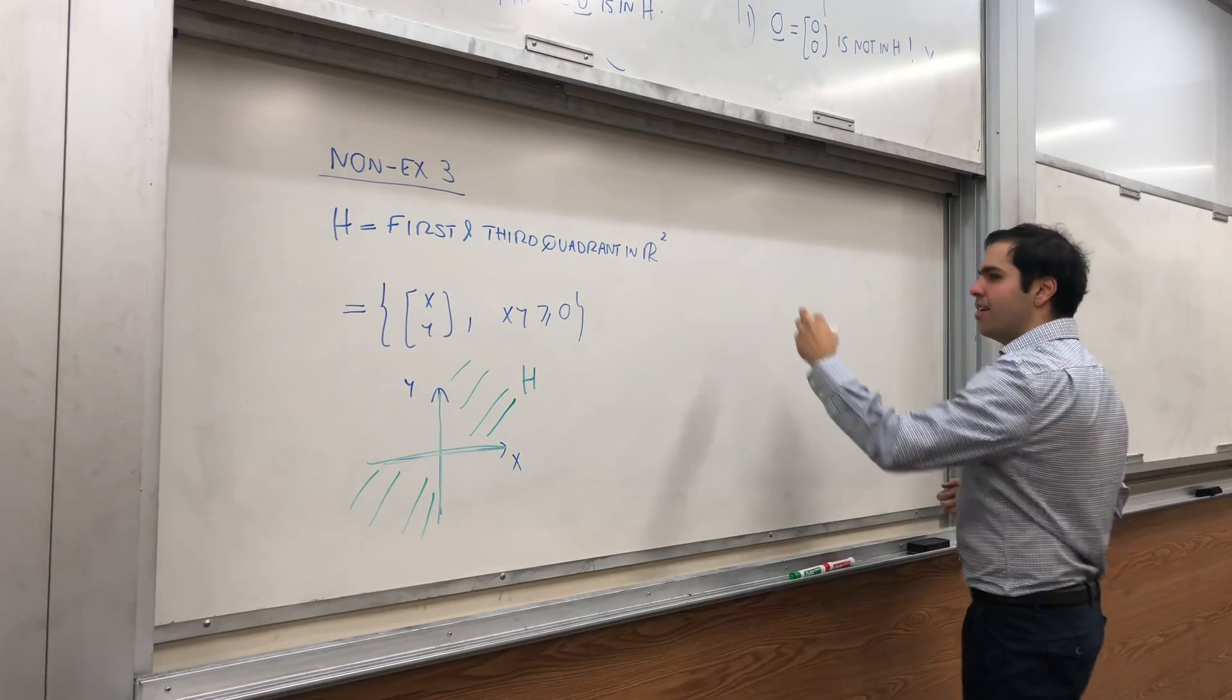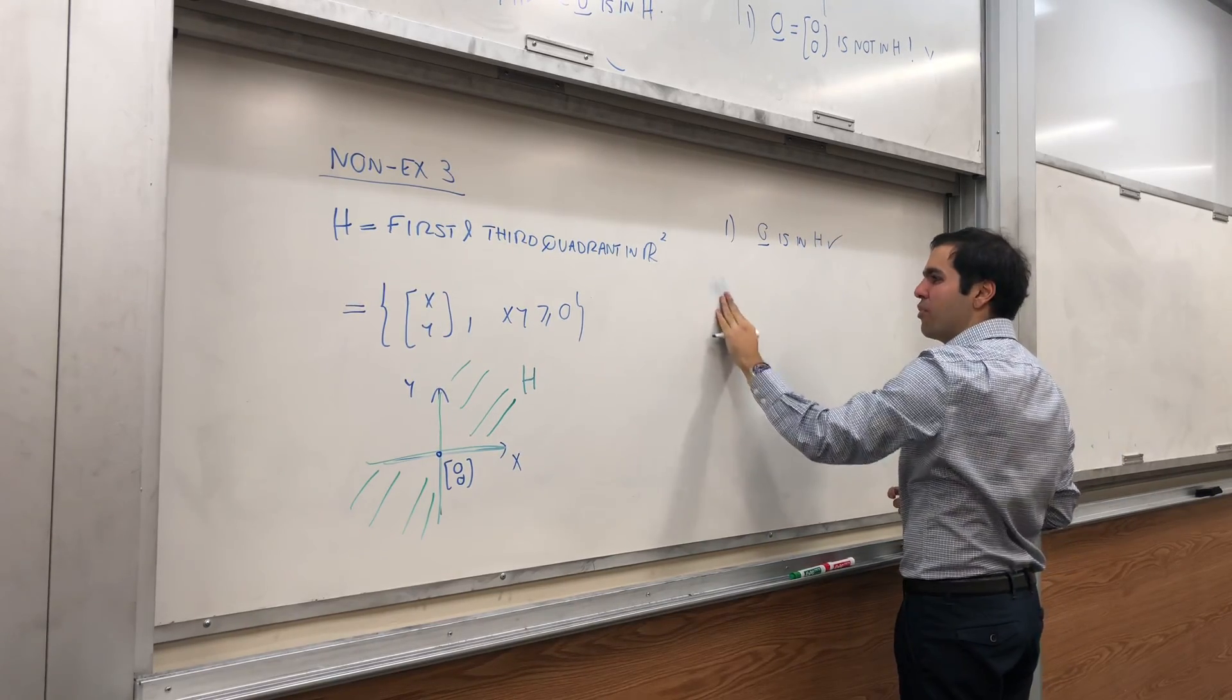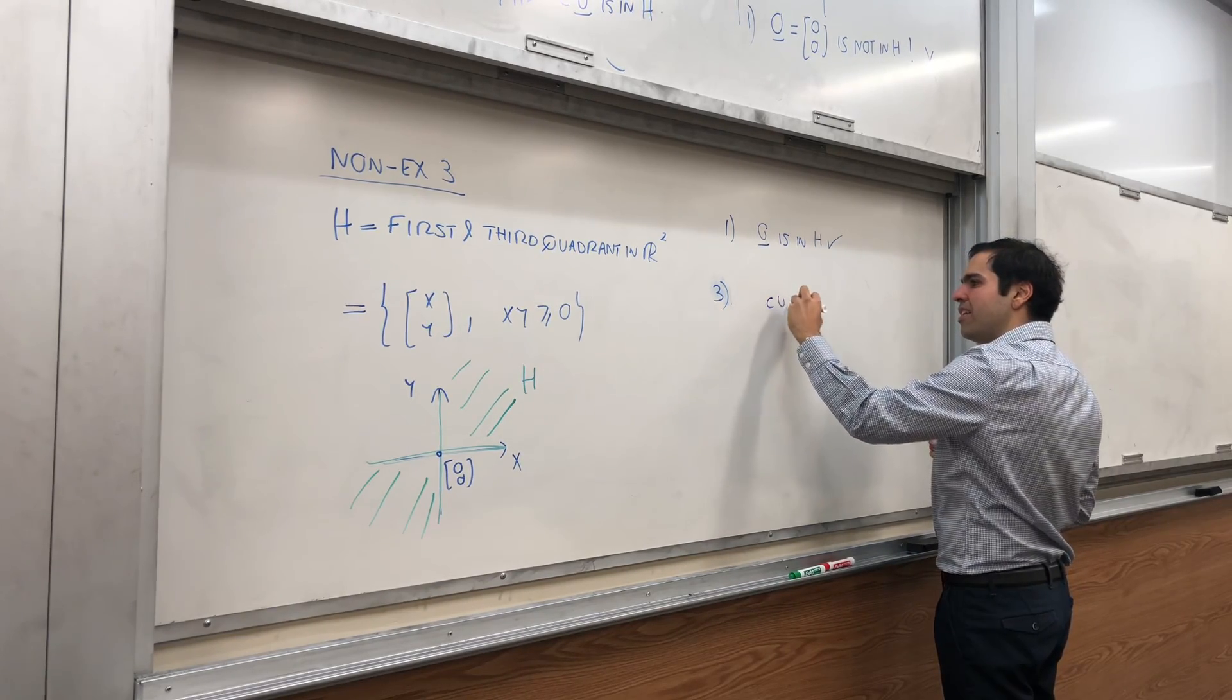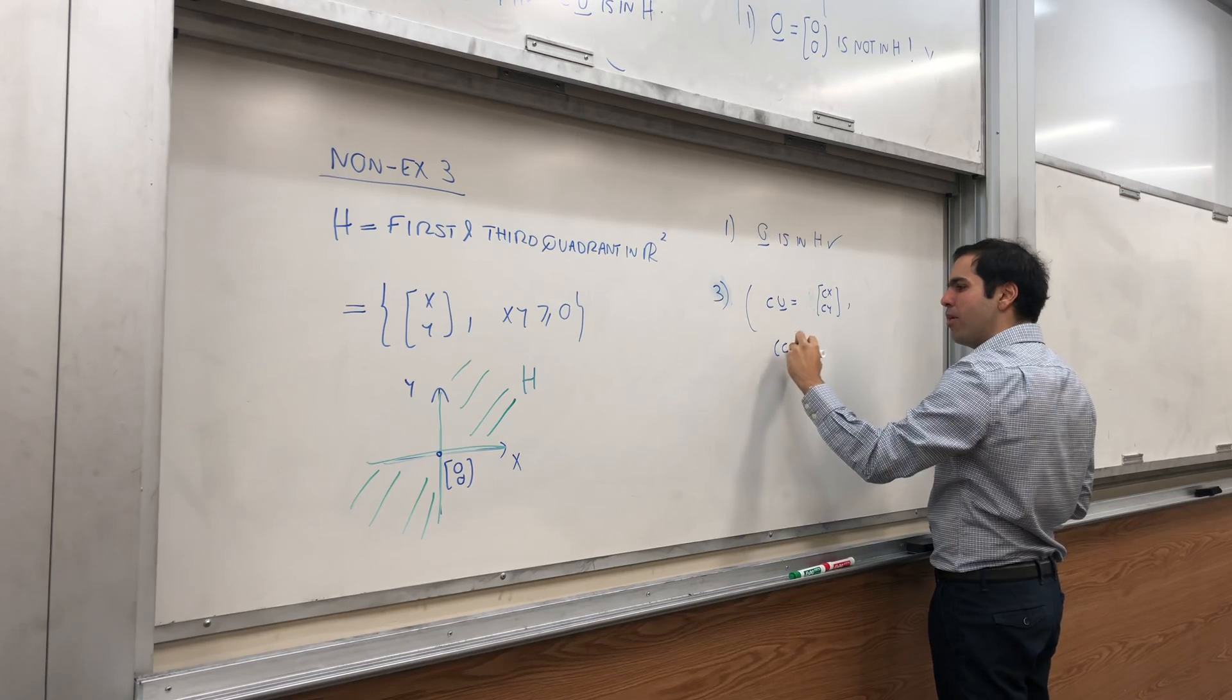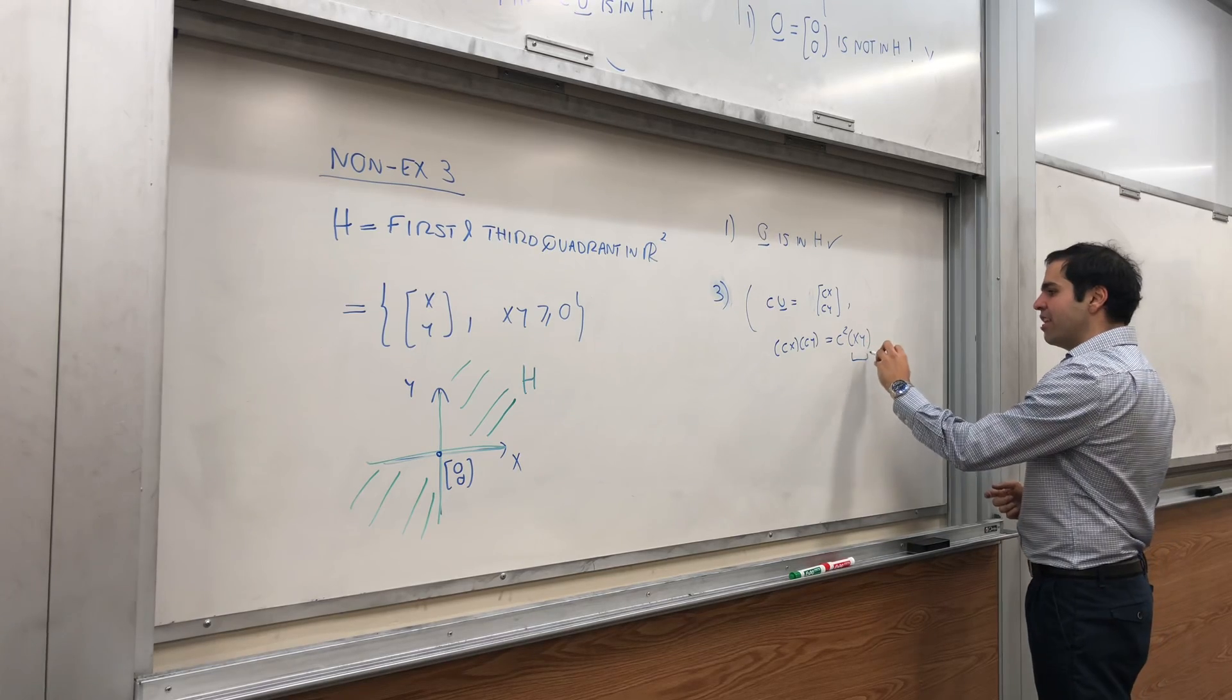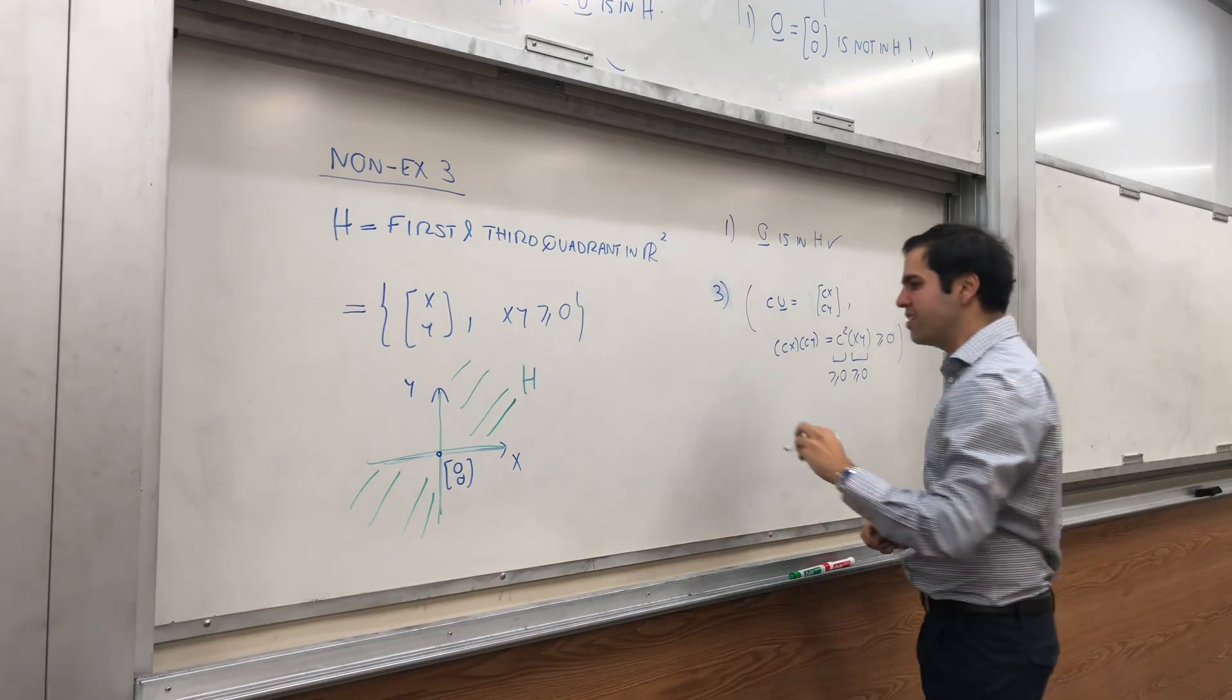Well, let's see. Is the zero vector in it? Yes, indeed. Zero is in H. And, you can also check that the third property holds. So, interestingly, this is closed under scalar multiplication. And, the reason is, if xy is greater or equal to zero, then cu would be c times (x, y), so (cx, cy). And if you multiply both of them, you get c squared xy. But, if by assumption xy is greater or equal to zero, c squared is greater or equal to zero, so this is greater or equal to zero. So, indeed, cu is also in H. So, it is closed under scalar multiplication.